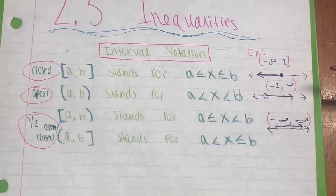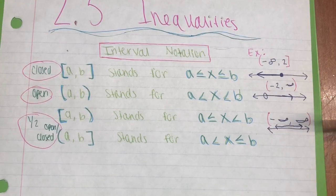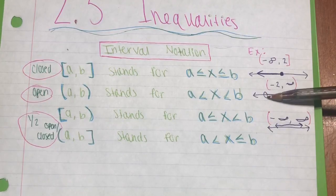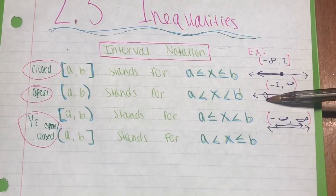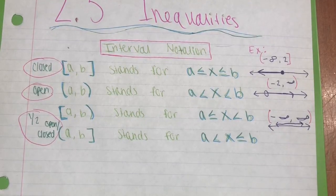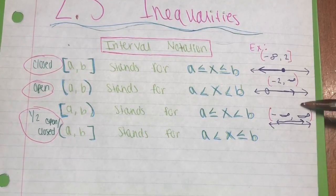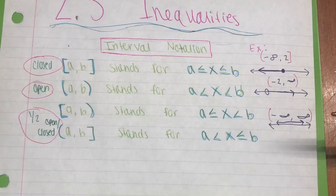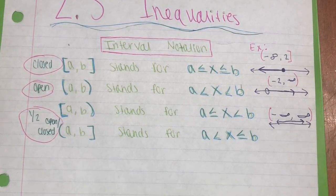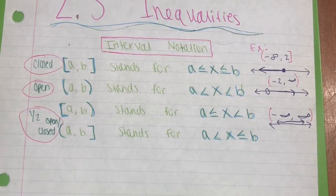For negative 2 to infinity, we have two parentheses, which indicates that the interval is open. So we start at negative 2 with an open point and continue to the right to infinity, which is also open. For our third interval, we have negative infinity to infinity with two parentheses, which is an open graph, and the number line simply goes on to infinity as an open interval.